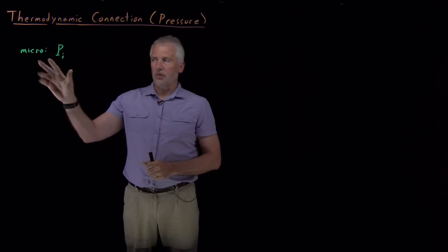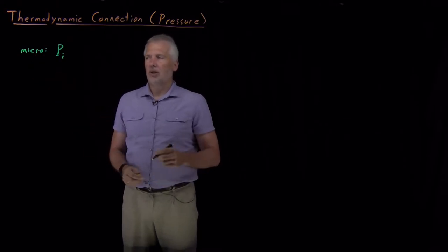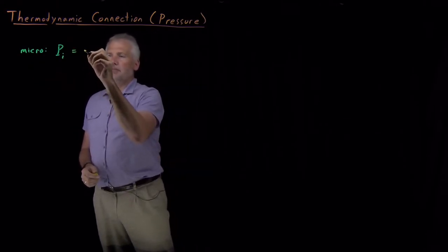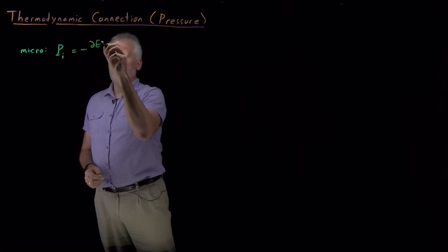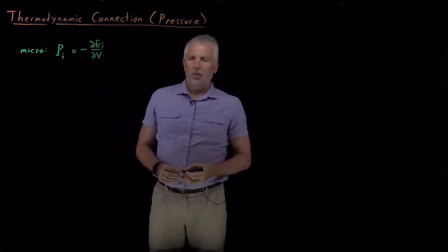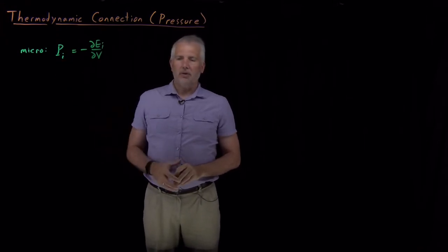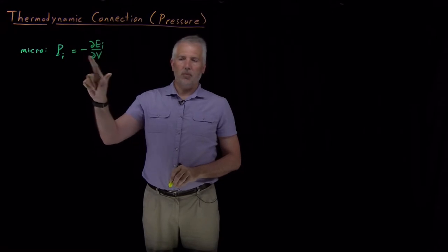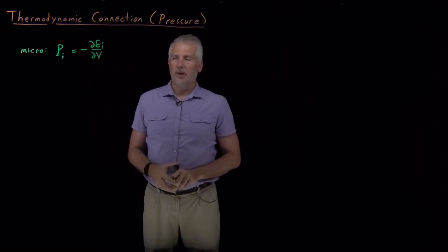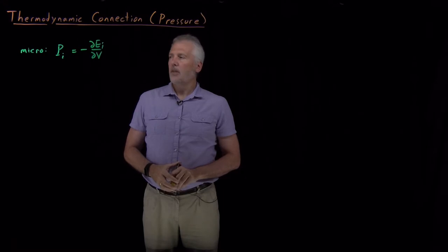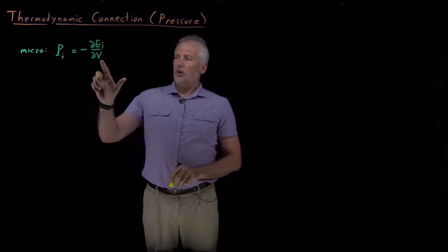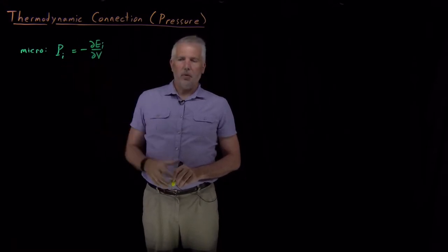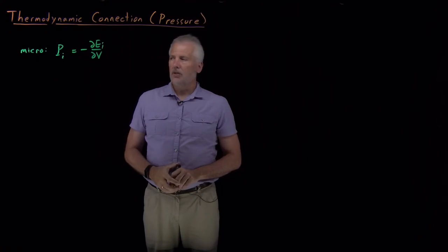Each individual state has its own microscopic definition of the pressure. How we define the pressure at the microscopic level is it's the derivative of the energy with respect to volume, with a negative sign, because the energy goes down as the volume goes up and vice versa.